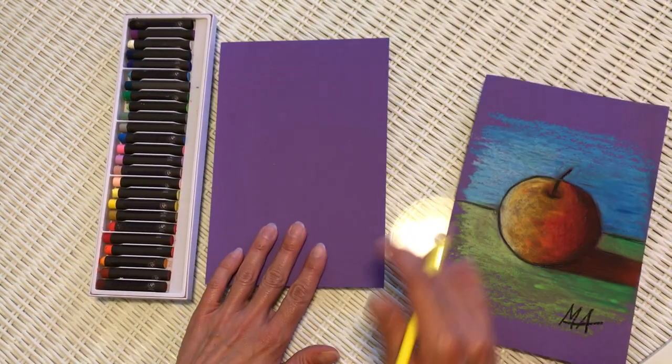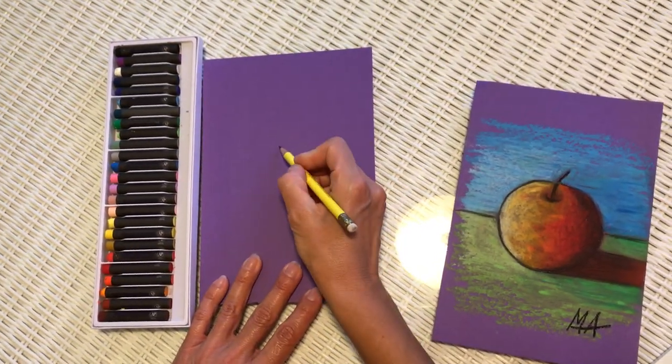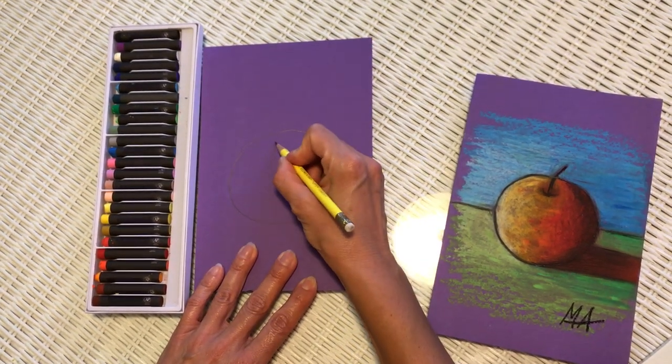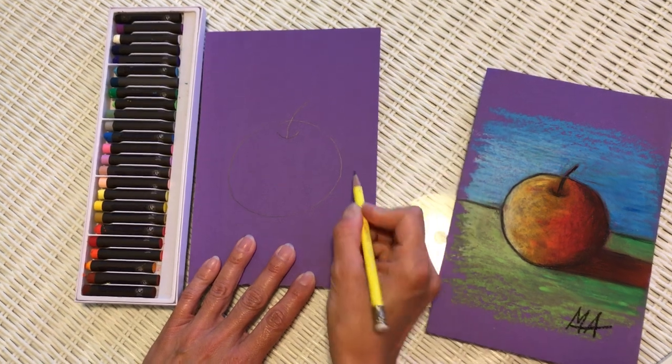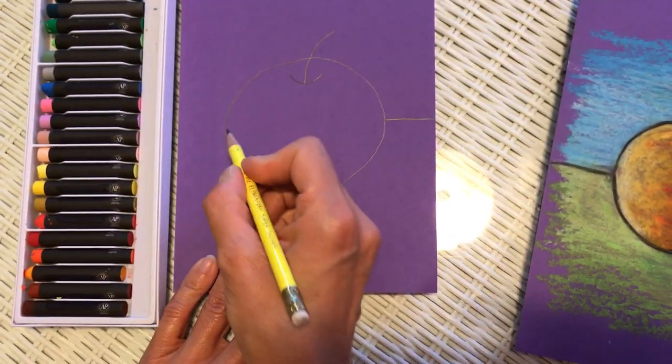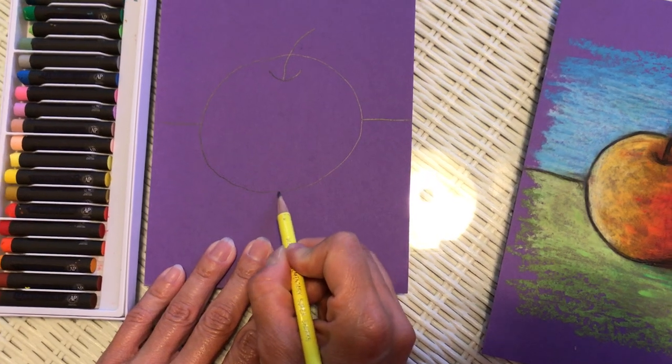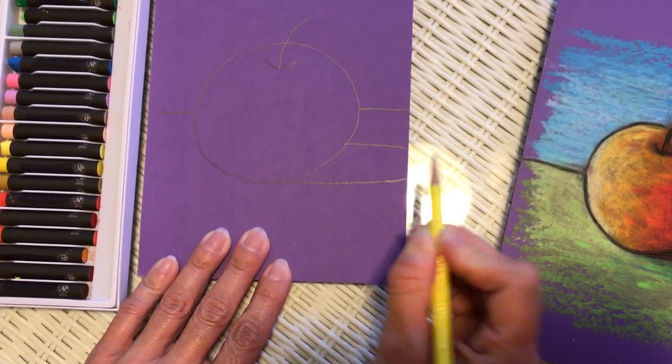So I'm going to take a piece of paper, we're going to draw our apple, nice light, nice circle like this. Okay, we're going to draw the table and we're going to draw the shadow of the apple.